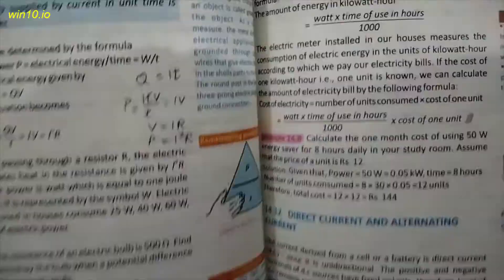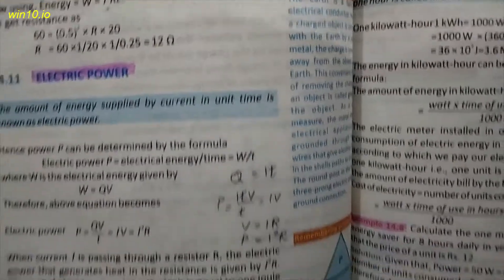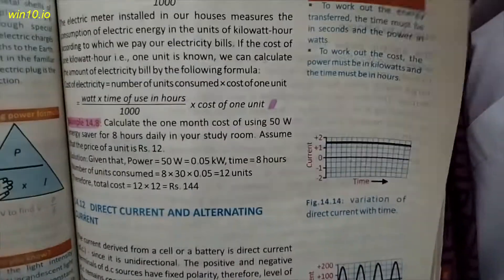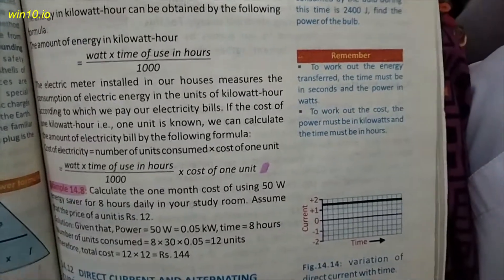Next, page number 106, electric power, kilowatt hour. Page number 107, here example 14.8.